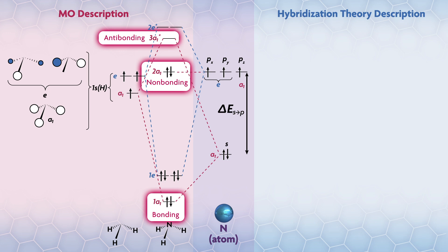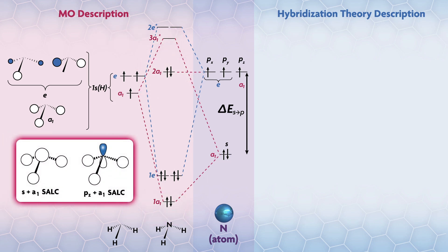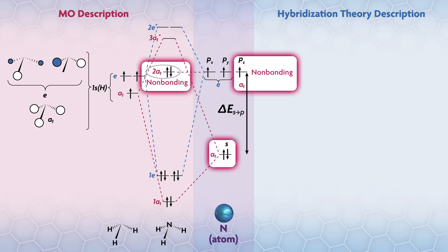The s orbital on nitrogen definitely looks like it will overlap better with the A1 SALC than the pz orbital, which looks like it might even have a little bit of anti-bonding character. So let's say the pz orbital is non-bonding and s makes a bonding-antibonding combination like this, where the 2A1 orbital is non-bonding. Now this orbital could mix with either bonding 1A1 to go lower in energy, or with 3A1* to be raised in energy, but we have no data to suggest which, so we'll leave it here for now.